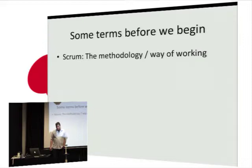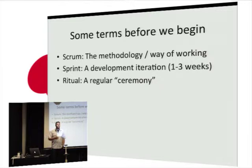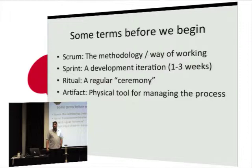Some quick terms: Scrum is the way of working. A sprint is a period of development, usually one to three weeks depending on the organisation and technology stack. Scrum rituals are regular ceremonies you perform throughout the sprint, and Scrum artefacts are physical tools, usually for managing the process.